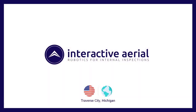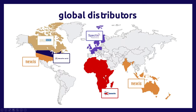Interactive Aerial is a U.S.-based company located in Traverse City, Michigan. Our team is focused specifically on building robotic systems for confined space inspections. We have distributors located around the world. Here in the U.S., we have a partner at Nexus that does our U.S. rentals. If anyone is in need of renting a Zenith system for a job, you can contact our partners at Nexus, based in Houston.